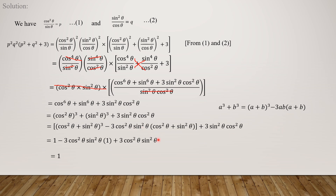Now cos²θ + sin²θ = 1. So this becomes 1³ − 3cos²θsin²θ × 1 + 3sin²θcos²θ, which gives 1 − 3cos²θsin²θ + 3cos²θsin²θ.